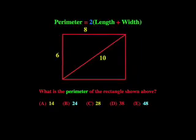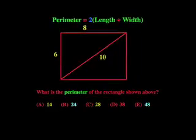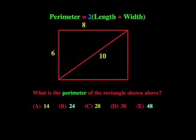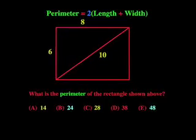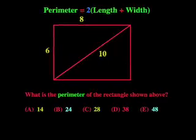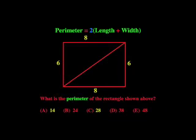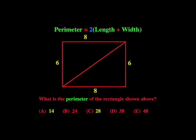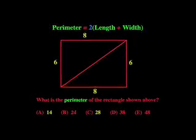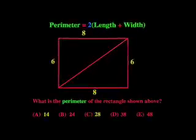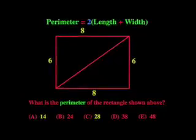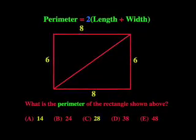Now we have a width of 6 and a length of 8, but we don't just add those two numbers. We remember the last step in the formula and double everything. A perimeter has two lengths and two widths, and so our answer isn't 14, but it's twice 14, which is 28.